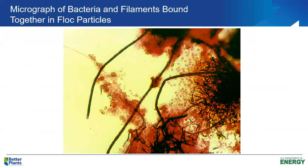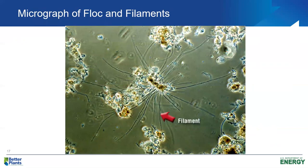Looking again at the micrograph of bacteria, we see clumps of bacteria and also the filamentous organisms that provide floc structure. It's very important to recognize the type of organisms present: small amounts of filaments strengthen the structure, while large amounts can adversely affect process performance. A general rule is if we have more than about 10 to 20 filaments per floc, we're beginning to have too many filaments and may see settlability issues in our final clarifier.